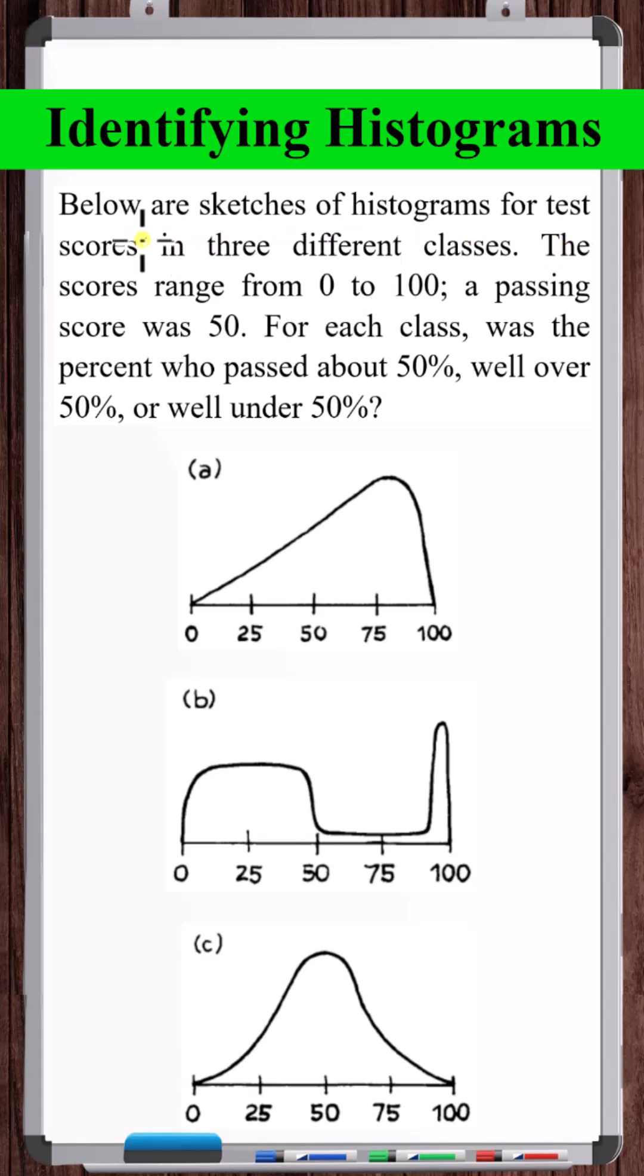Below are sketches of histograms for test scores in three different classes. The scores ranged from 0 to 100. A passing score was 50.